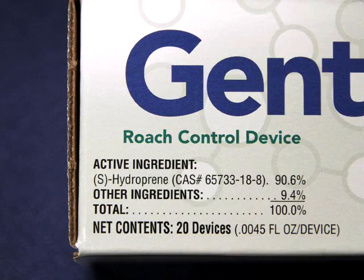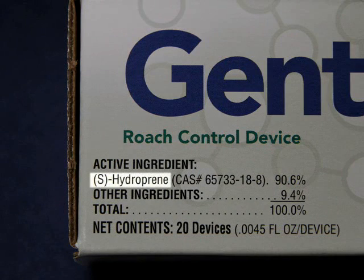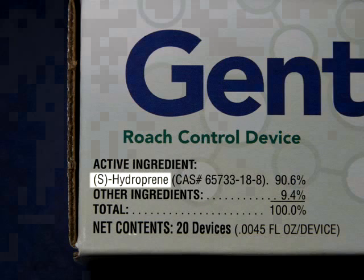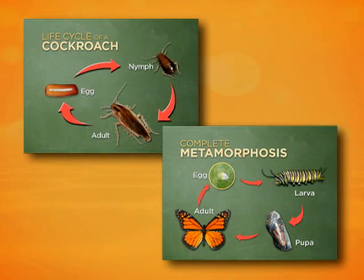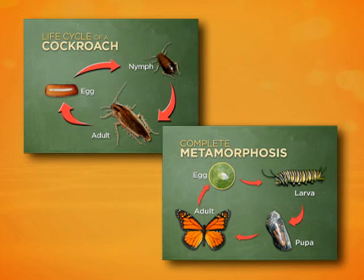Gentrol IGR contains the active ingredient hydroprene, which is the man-made equivalent of natural insect biochemicals. These biochemicals are what cause molting to take place. Gentrol, in essence, provides an overload of molting biochemicals, and this interferes with normal growth into the adult stage. You'll either see sterile adults or dead pupae, indicating the end of the cycle of infestation.